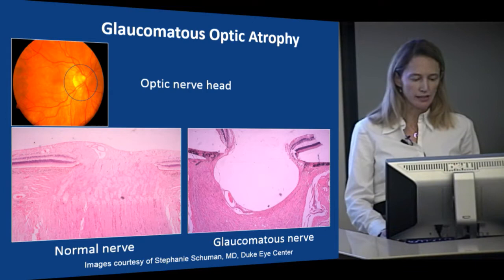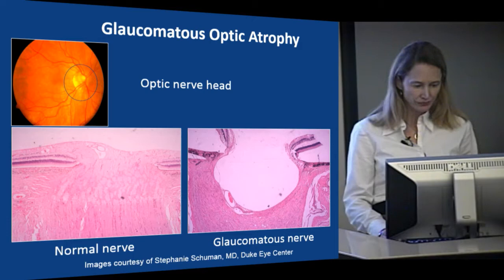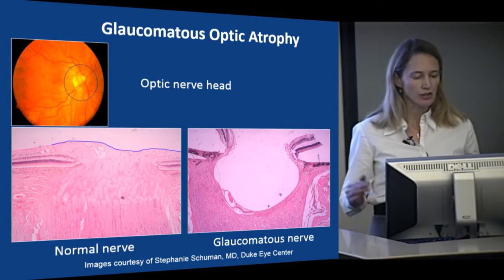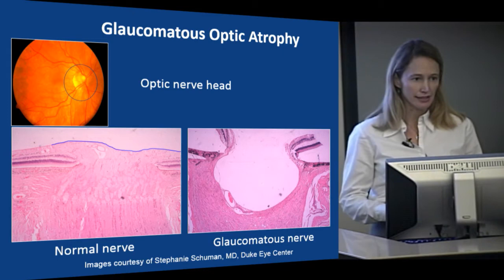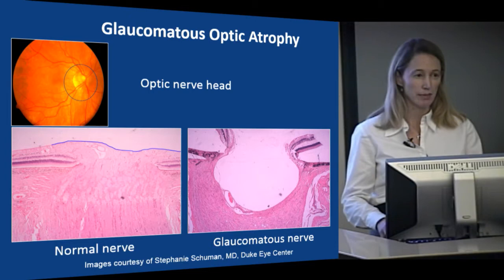This is a histologic specimen of a healthy nerve on the left and a glaucomatous nerve on the right. In cross-section you can see that the normal nerve has a slight depression — that's where the axons of the ganglion cells come together to make up the optic nerve. We all have some cupping of the optic nerve, but a patient who has glaucoma and has lost these ganglion cells — the axons have died off — and the nerve becomes significantly cupped and looks somewhat like a bean pot, as we often describe it clinically.